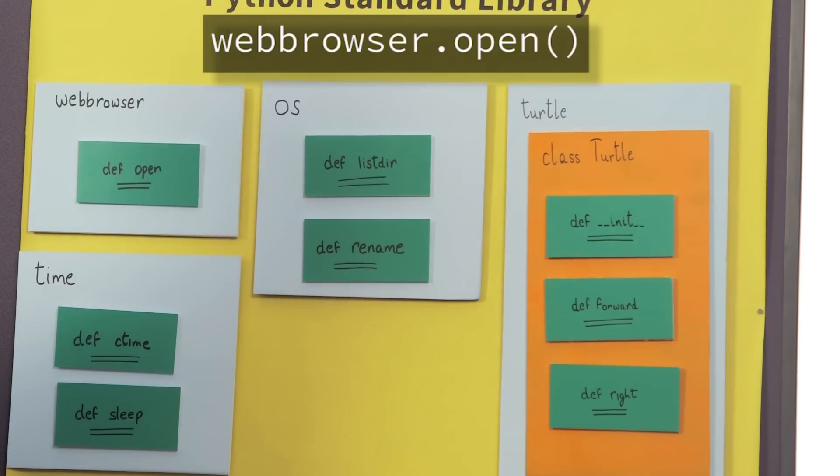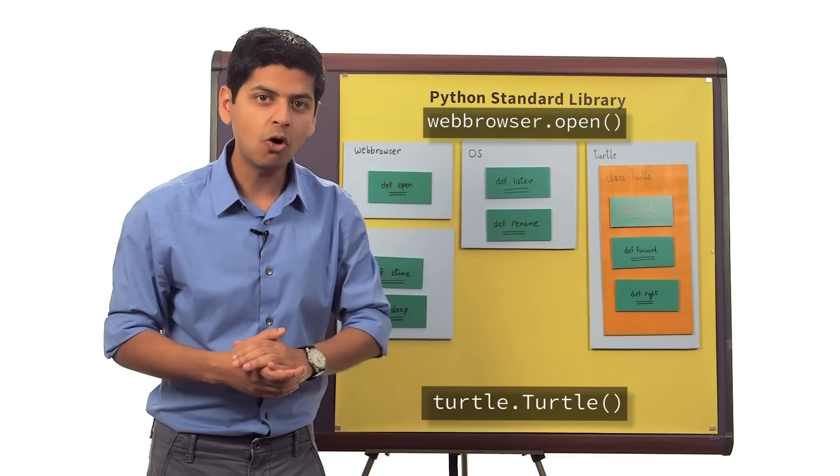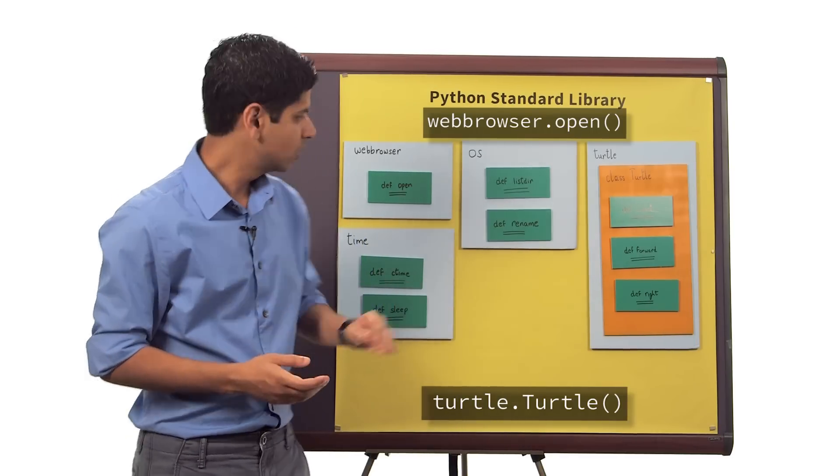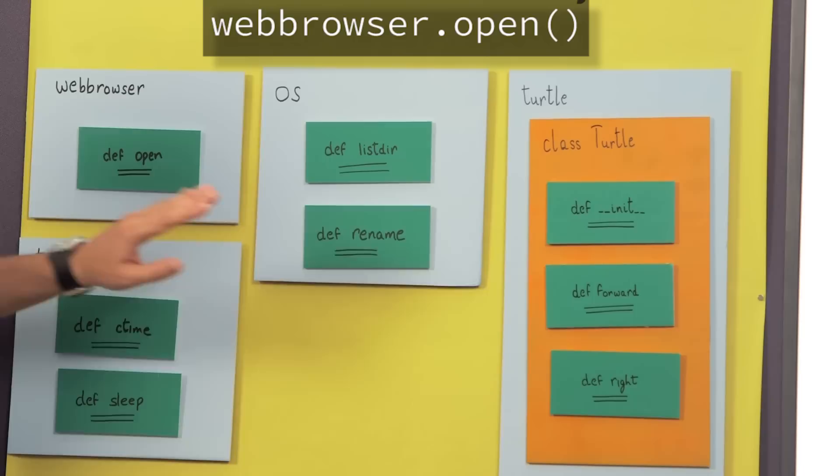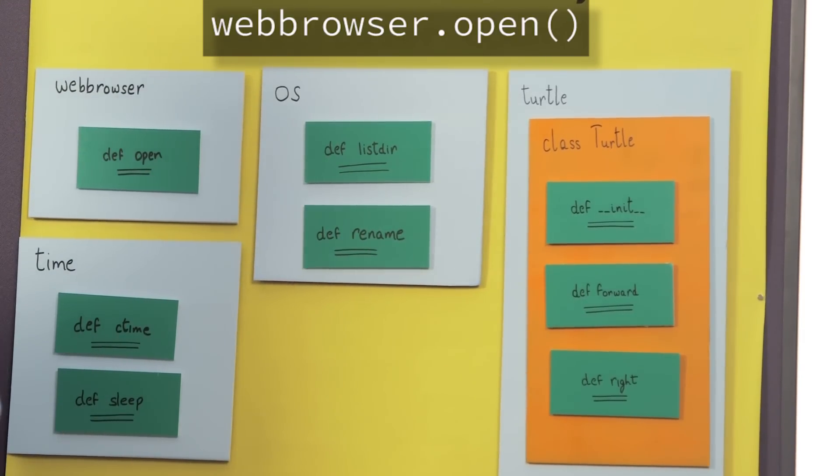And it creates or initializes space inside memory for a new instance which we called brad. Even though it seems like we called functions in both cases, we called open in the first case and the function init in the second case, not all functions are created equal.